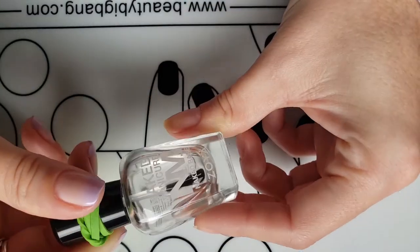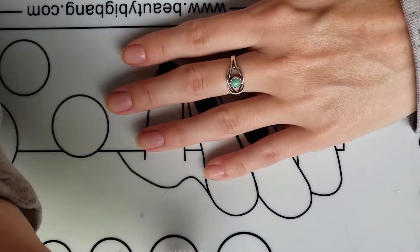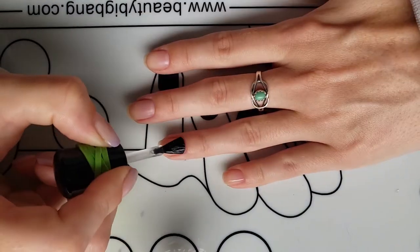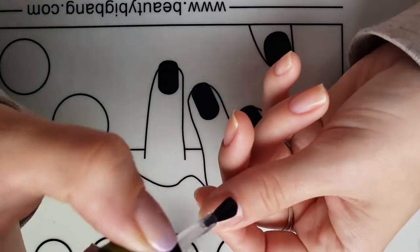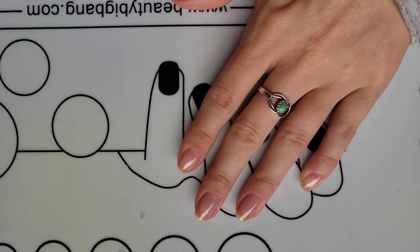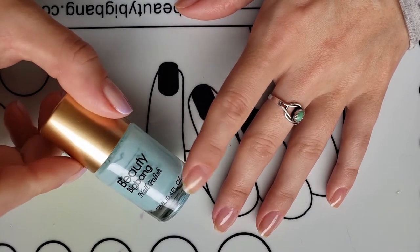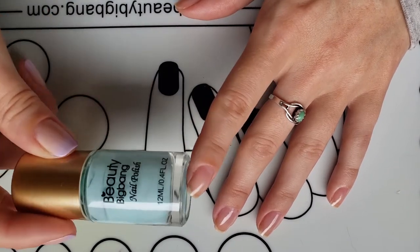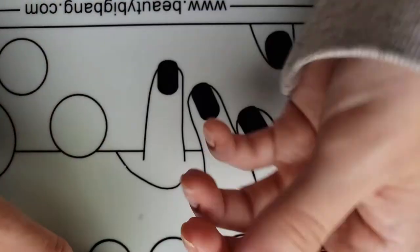But the first thing I'm going to do is use my Naked Manicure Zoya base. And then while that base coat is drying, I'm going to go ahead and put on some of this Beauty Big Bang Liquid Latex. I like having this for my manicures.